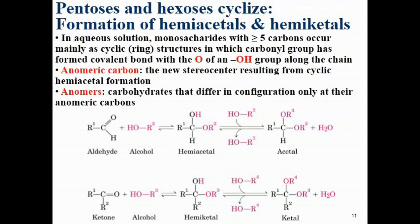Due to this cyclic formation between the carbonyl group — whether from the aldehyde or ketone — and a hydroxyl oxygen along the chain, a new stereocenter is created. This is known as the anomeric carbon. Anomers are carbohydrates that differ in configuration only at their anomeric carbon. The carbon that was initially non-chiral (being an aldehyde or ketone) becomes a new chiral center upon cyclization.